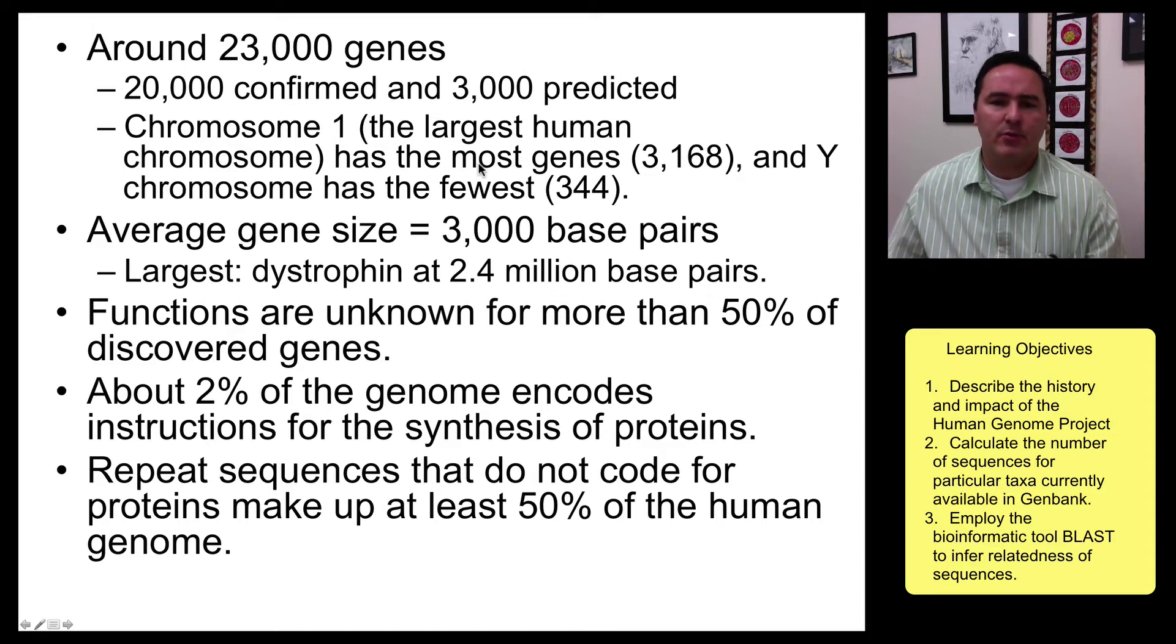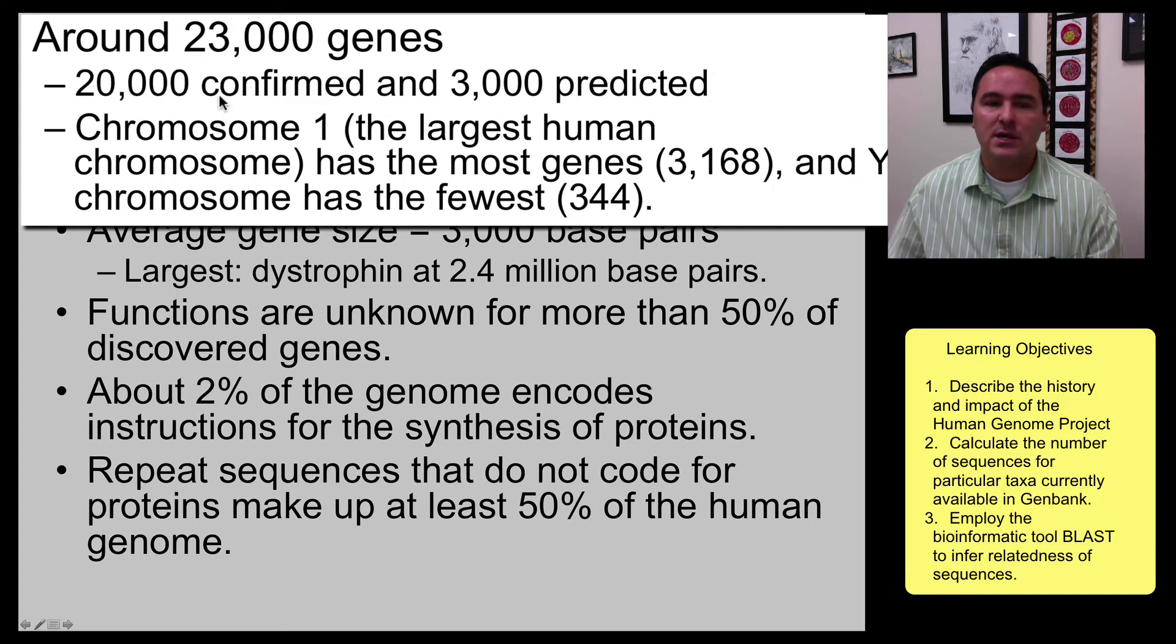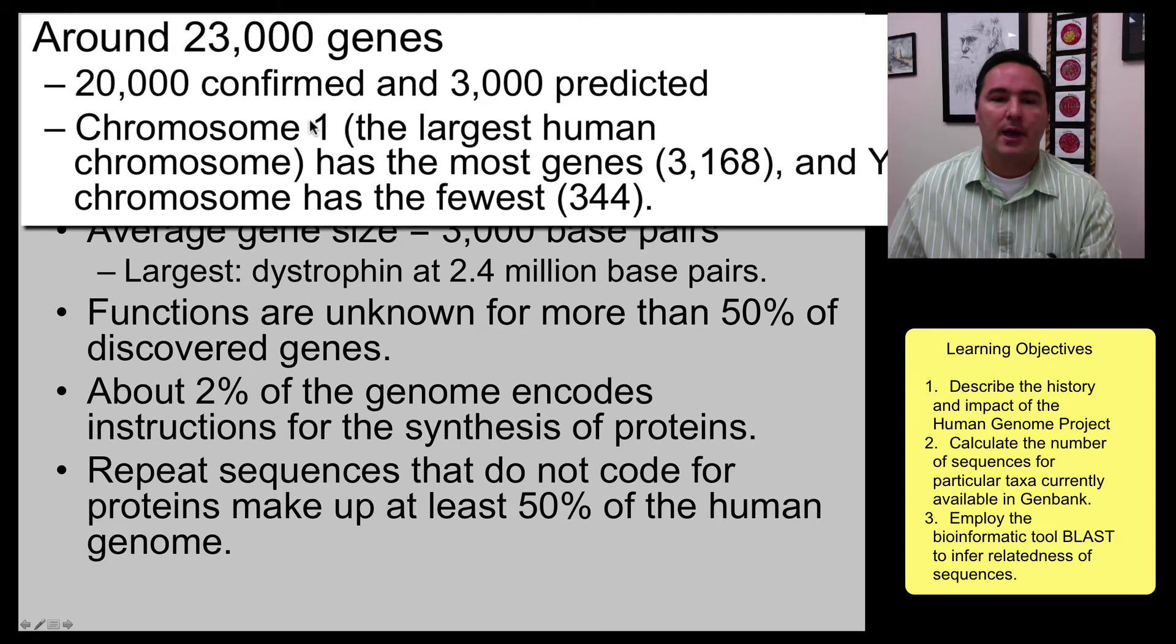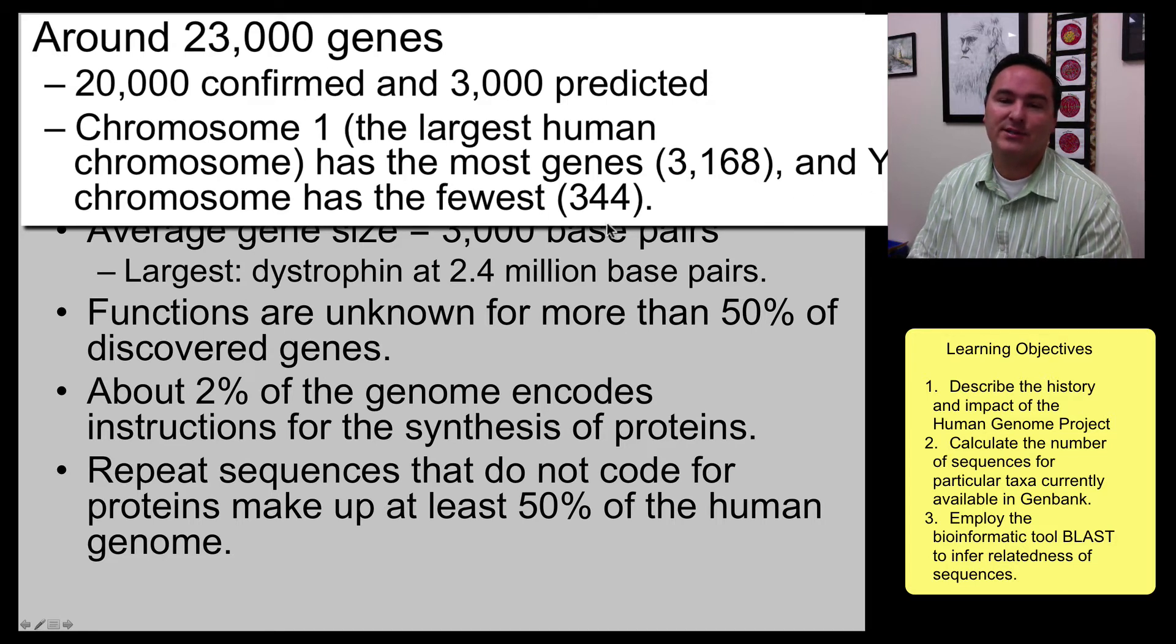So some of the results from this is we found out that the human genome actually has a surprisingly fewer number of genes than what we originally thought. There's about 23,000 genes, 20,000 of which have been confirmed through experimentation, and the other 3,000 are predicted through computer models, but we think they probably are genes as well. Chromosome 1 is the largest human chromosome and has about 3,170 genes, and the Y chromosome has the fewest confirmed genes at 344.